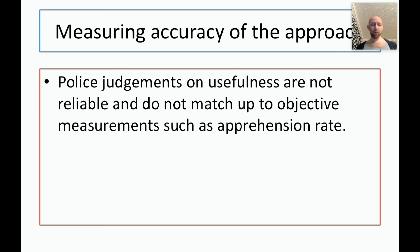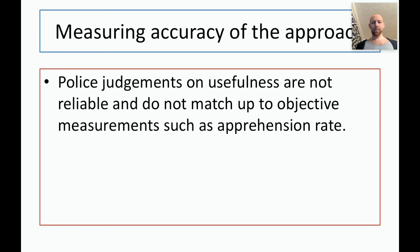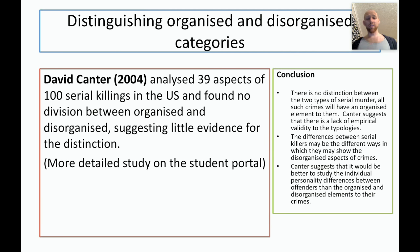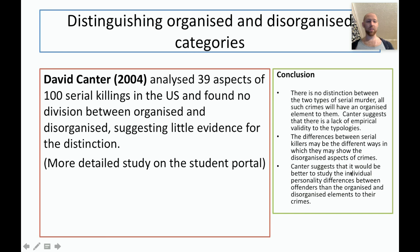Another issue is measuring accuracy. In order to be effective, we would need the profiler's characteristics to match up with the offender's characteristics when they're finally apprehended — this is not often measured. On the distinction between organized and disorganized: it may not actually be a meaningful category. David Cantor carried out research in 2004 suggesting that a better technique might be to assess personality differences rather than the characteristics of particular crimes. He argued that in his study these categories didn't exist, at least in the hundred serial killings he investigated.